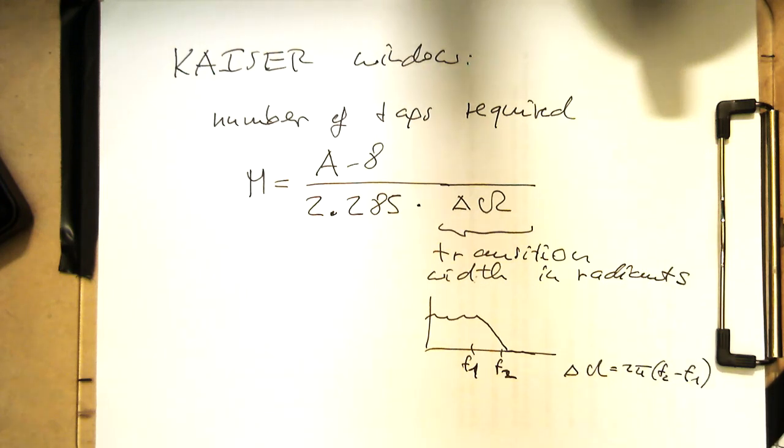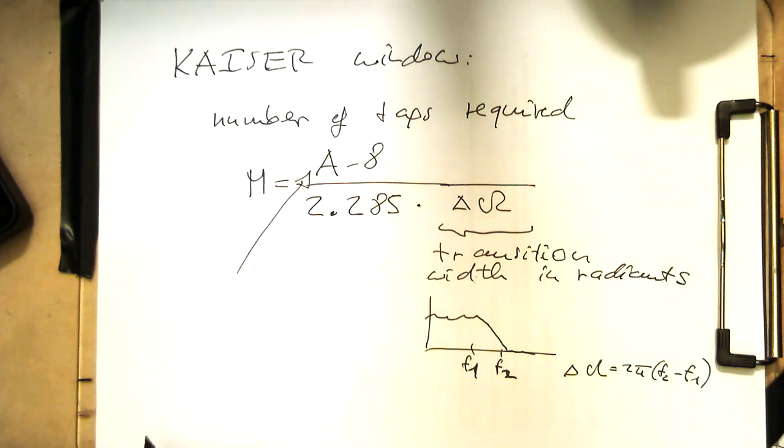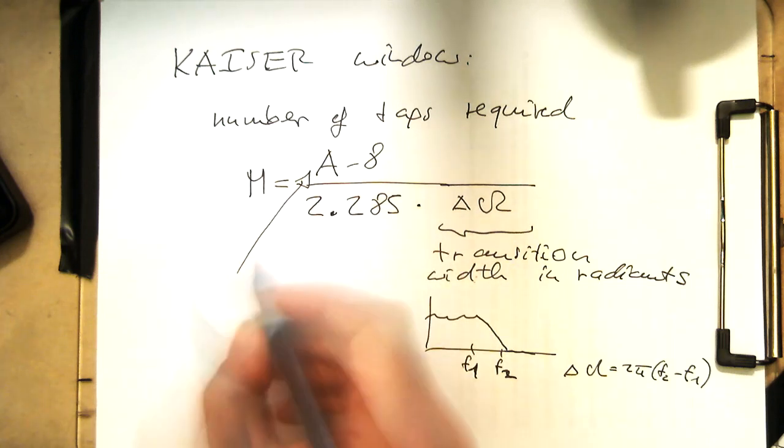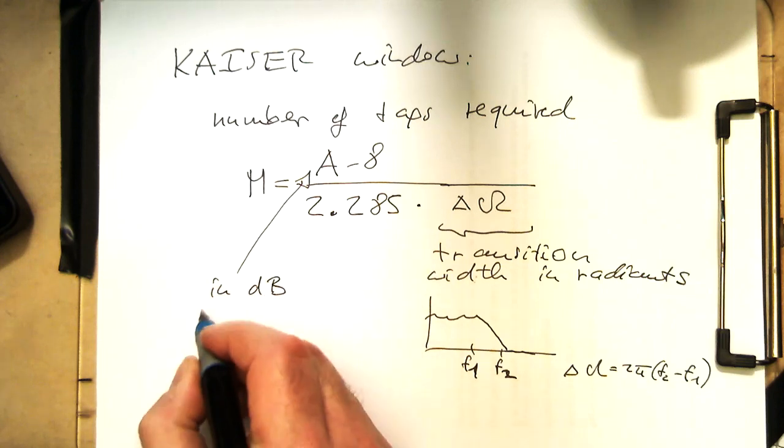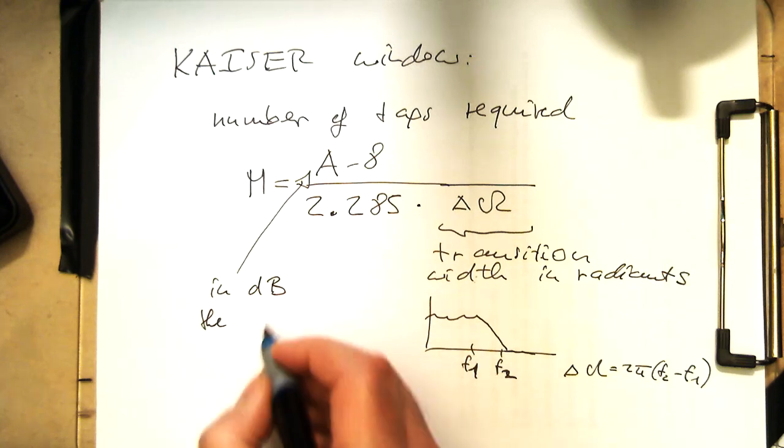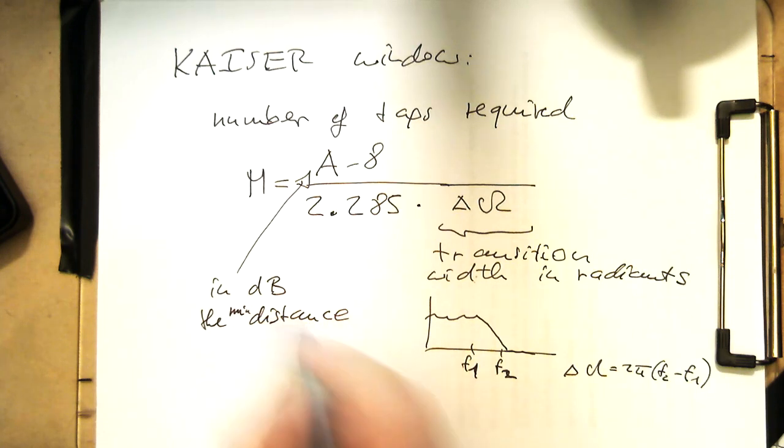That's the idea behind that, and then remember we've got this factor A here. That's in decibel the minimum distance between main lobe and side lobe.